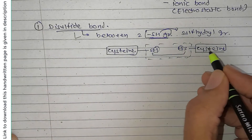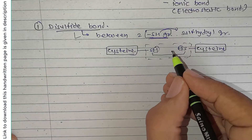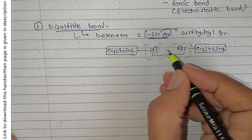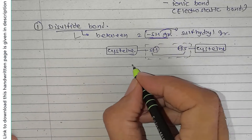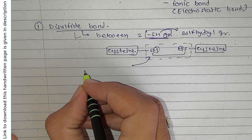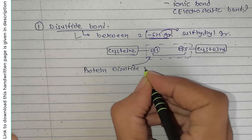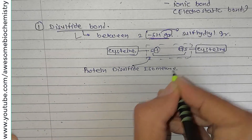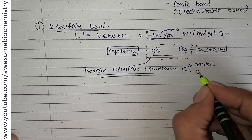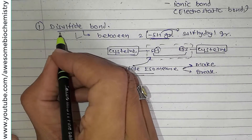Both cysteine molecules may be very far from each other in the primary sequence, but because of the three-dimensional arrangement of the tertiary structure, they are able to come near and form the disulfide bond. This bond formation is not spontaneous — an enzyme called protein disulfide isomerase facilitates it. This enzyme can both make and break disulfide bonds and plays a very important role during protein folding.